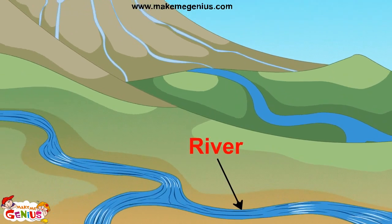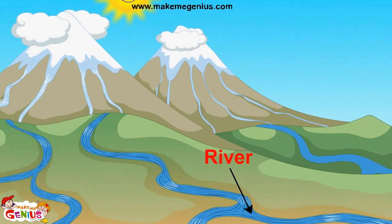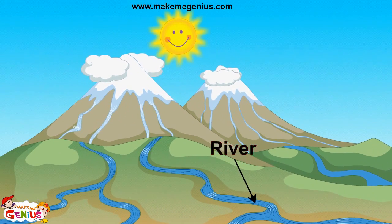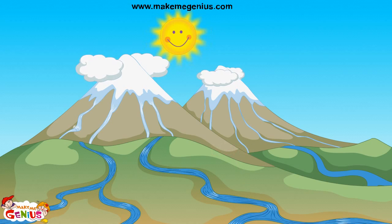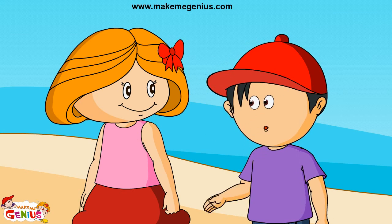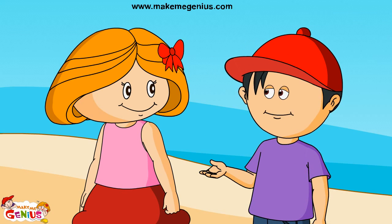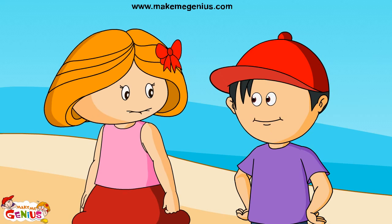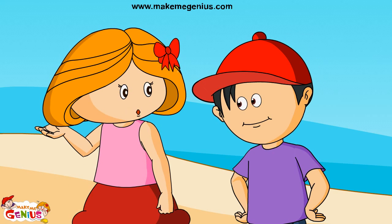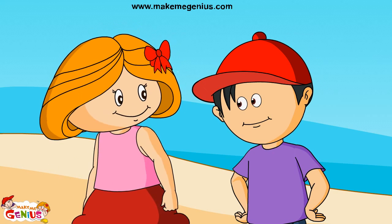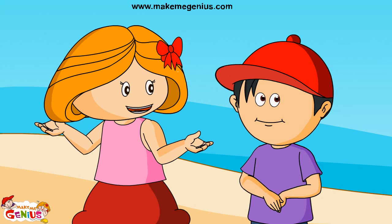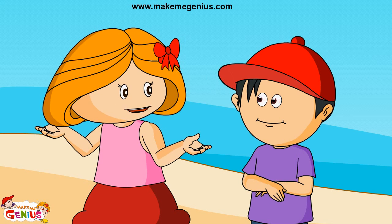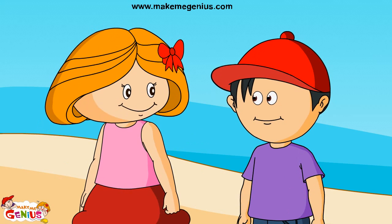A large natural stream of water with land on both its sides is called a river. This river is going into the ocean. Do all rivers go into the ocean? Most of the rivers go into the ocean, but many rivers get merged in other rivers or they go into a lake.